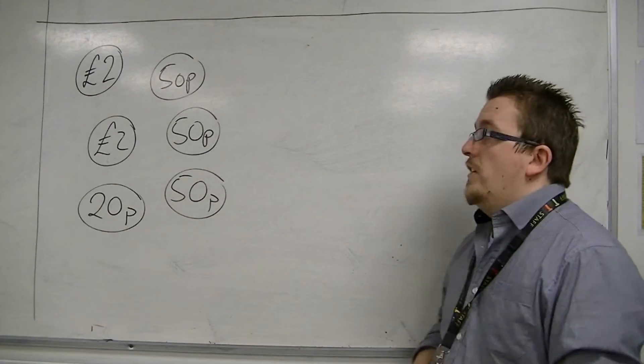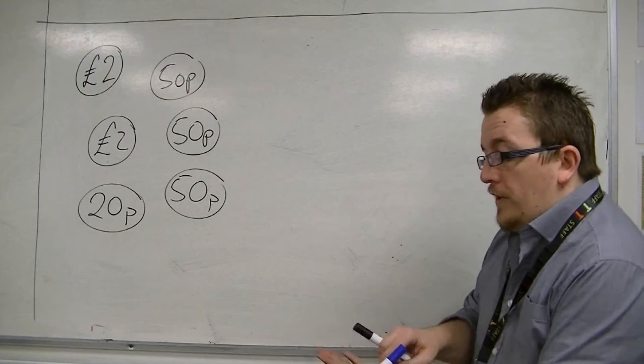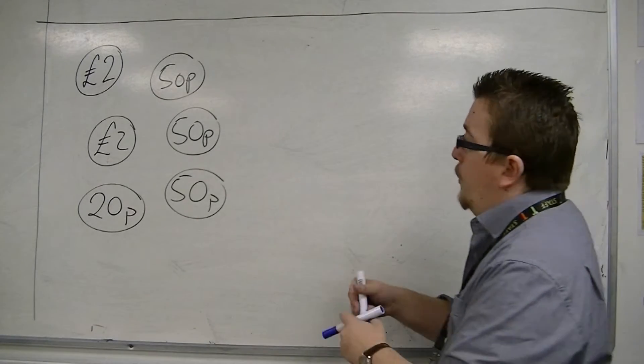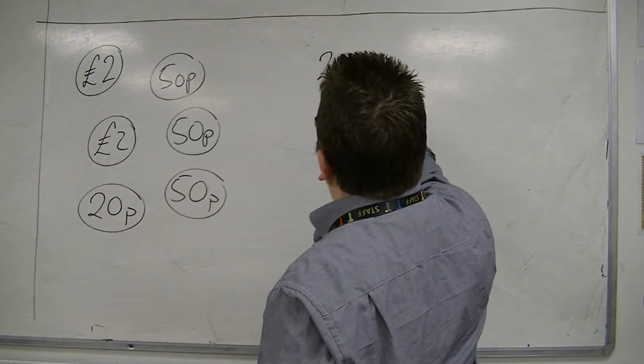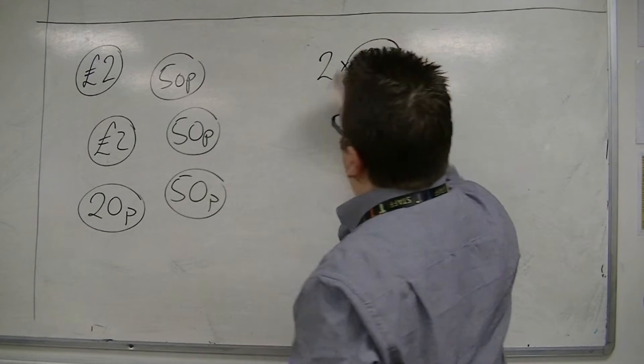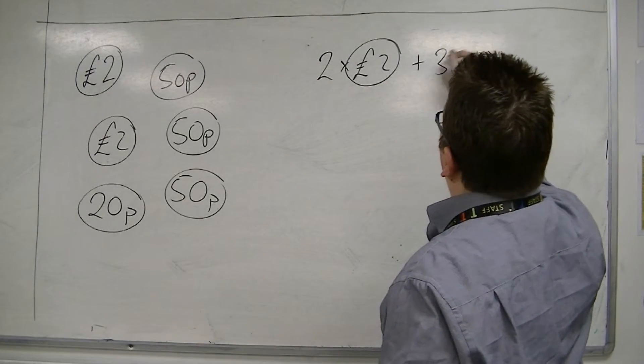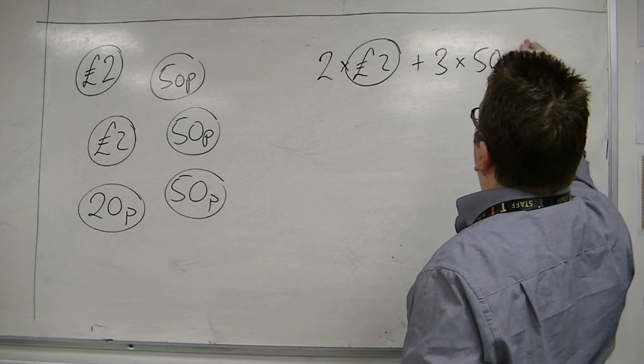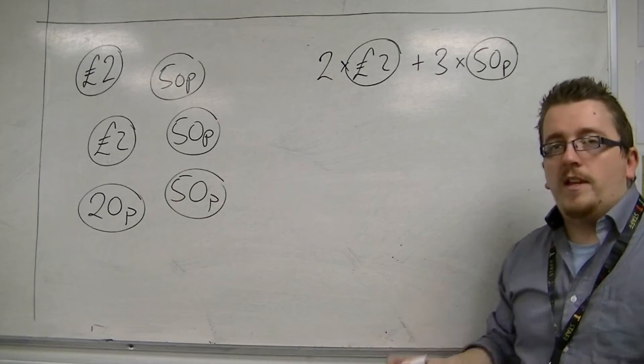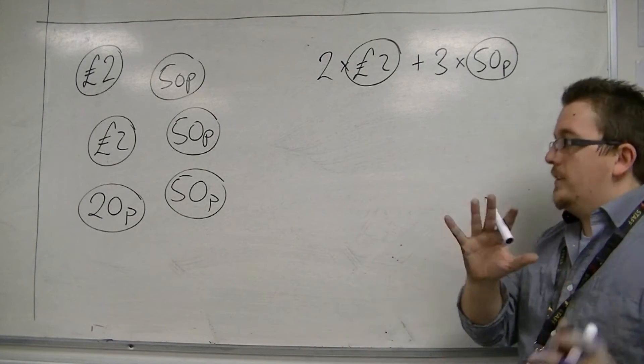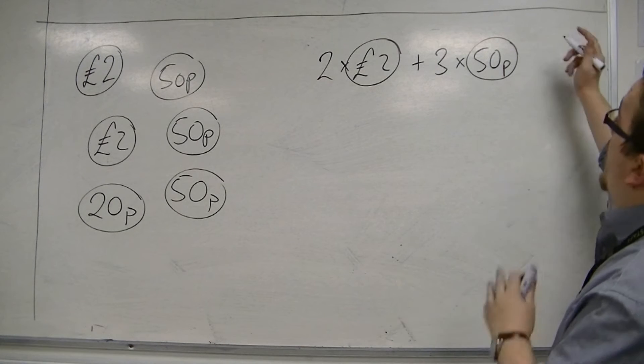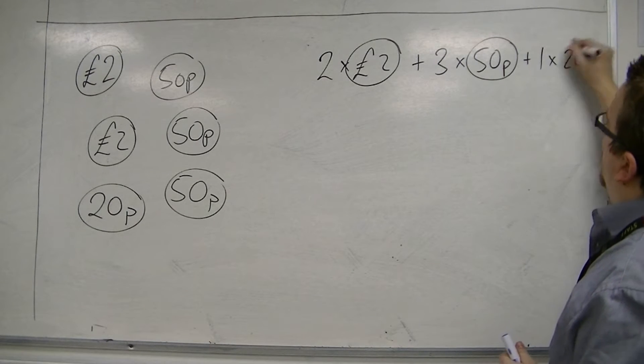Then, if I was going to say, right, all together, the natural thing to do would be to say, right, well I've got two £2 coins, I can see that, and I've got three 50p coins, and if you're going, why is Jack saying p, you should say pence, okay, well fair enough. And then, one 20p coin.